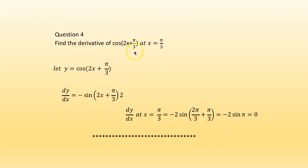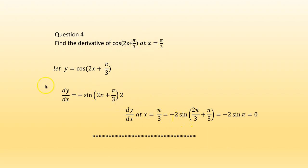Next, find the derivative of cos(2x + π/3) at x = π/3. Let y = cos(2x + π/3). Applying the chain rule, dy/dx = −sin(2x + π/3) · d/dx of (2x + π/3) = −2·sin(2x + π/3). At x = π/3, this gives −2·sin(2π/3 + π/3) = −2·sin(π) = 0.